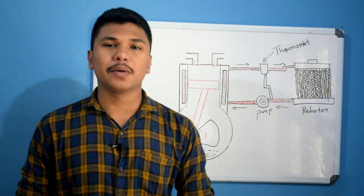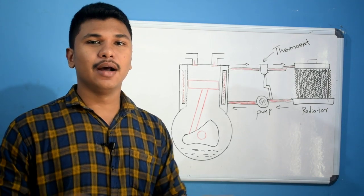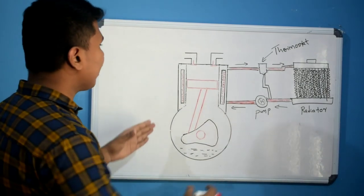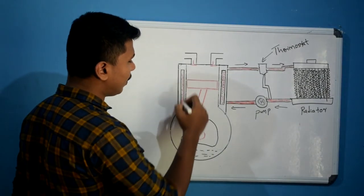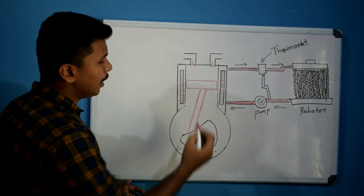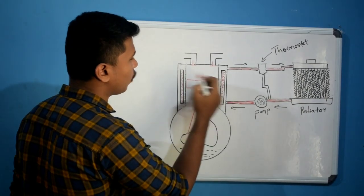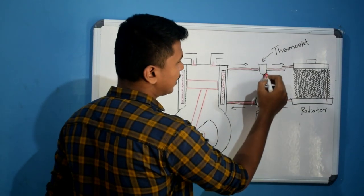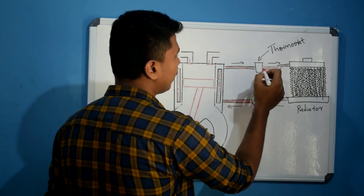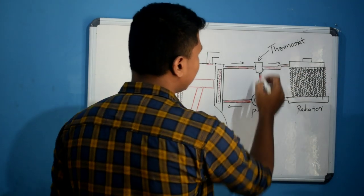In liquid cooling, there are coolant passages in the cylinder block called the coolant gallery, also known as a water jacket. The coolant absorbs the heat from the engine. The system uses a thermostat, which has a valve that controls the flow of coolant based on temperature — opening when hot and closing when cold.